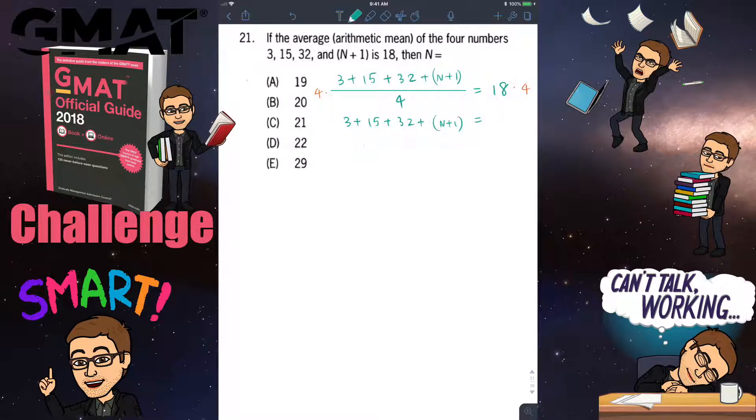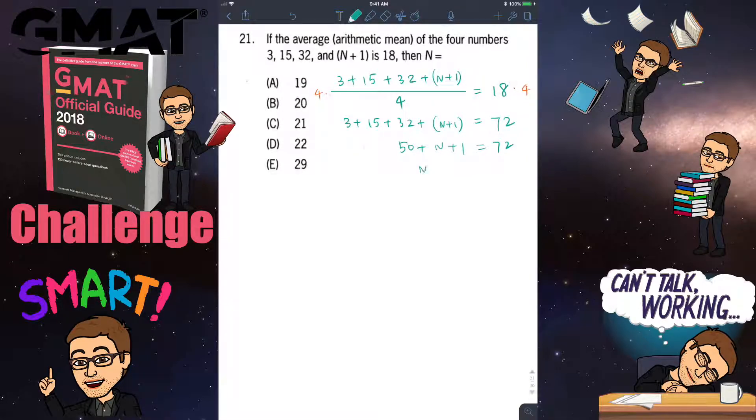On the right hand side it's 18 times 4, which is 72. Then combine like terms on the left hand side: 3 plus 15 is 18, 18 plus 32 is 50, so this is 50 plus n plus 1, which equals 72. Basically this is n plus 51 equals 72.